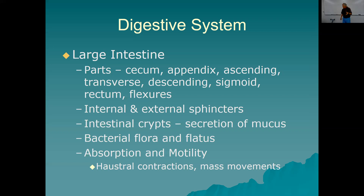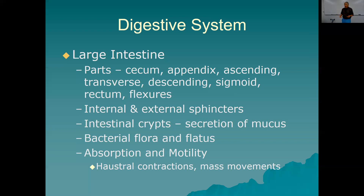There are intestinal crypts with secretion of mucus — it's a mucous membrane. Bacteria flora (the microbiome) are the trillions of bacteria in your large intestine. They used to be called flora because they were grouped with plants, but they are bacteria. They make gas because they actually digest some of the material we can't — particularly fiber — and produce gas as a byproduct. That's what flatulence is: intestinal gas.